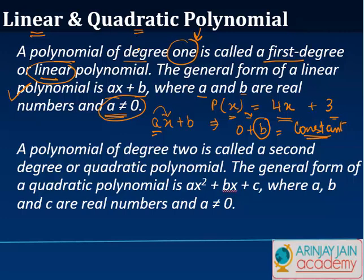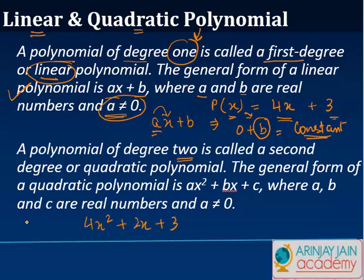A polynomial of degree two is called a second degree or a quadratic polynomial. The general form is ax squared plus bx plus c, where a, b, and c are real numbers and a is not equal to zero. For example, p(x) = four x squared plus two x plus three — the highest degree of the variable x is two, so this is a quadratic or second degree polynomial.